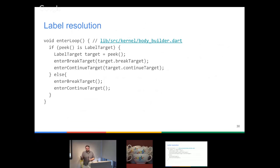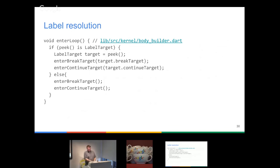There's one more complicated thing with resolution: label resolution. The parser always knows when it's starting a loop construct, so I have an event and in that event I call into a loop handler. I look on the stack — did I push a labeled statement? Because if you have a for loop with a label in front of it, the default thing you break to is that label, at least that's how it is in kernel. So I need to make sure I don't set up two different targets.